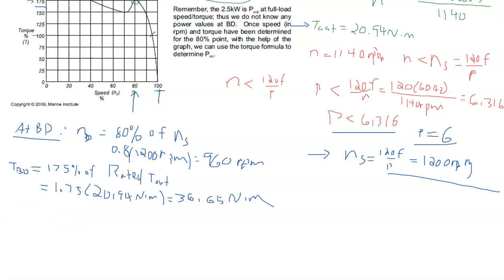Now that we have those, from our torque equation T equals 9.55 times P out over N, the power produced at breakdown will be equal to the speed at breakdown multiplied by the torque at breakdown and divided by our constant, 9.55.